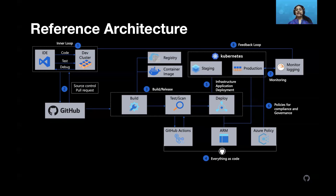Number four practices everything as code. Can you store your pipeline as code? Can you store your infrastructure as code - for example, using ARM templates on Azure? Can you store your policies as code? When you store all of these as code, you achieve reliability and collaboration among team members and can consistently use a pipeline to deploy. Number five combines everything you've stored as code - the pipeline, infrastructure, and application - to deploy automatically to all your environments: dev, staging, and production. Number six is about policies: how do you define and store policies as code and apply them consistently across all environments?